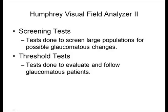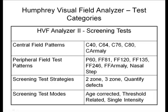There are two basic types of tests on a Humphrey visual field: screening tests and threshold tests. Screening tests are done to look at large numbers of patients or populations for possible glaucoma changes. They're not sensitive enough or don't bracket threshold enough to follow patients long-term for glaucoma. Several screening tests are available on the Humphrey Field Analyzer 2, but they are not typically used in practice.